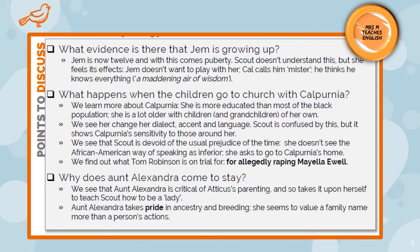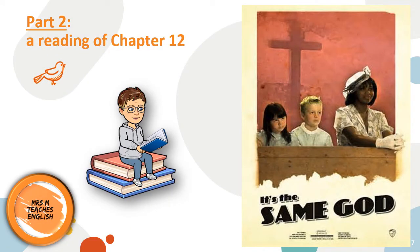As we read, pay attention to these three points: first, Jem's increasing maturity — there's a widening gap between Jem and Scout as he understands things she cannot. Second, the passage where Calpurnia takes the children to a church service at First Purchase, where the congregation is all black — look for evidence of racism and prejudice and watch for references to Tom Robinson and the trial. Third, the role that Atticus's sister, Aunt Alexandra, plays in the second part of the novel. Let's start with chapter 12.